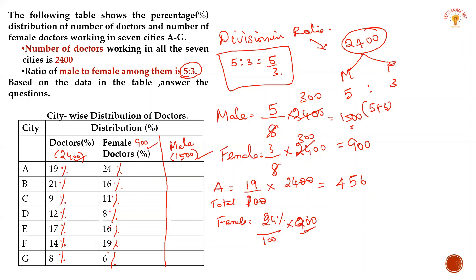So female doctors in city A: 900 multiplied by 24% gives 216. Total doctors in city A is 456, female is 216. If we subtract to find male doctors: 456 minus 216 gives 240 male doctors in city A.